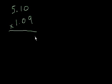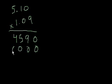9 times 0 is 0. 9 times 1 is 9. And 9 times 5 is 45. And in the 0's place, you put a 0, and then 0 times everything is 0, right? 0 times 0 is 0 times 1, 0 times 5.